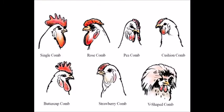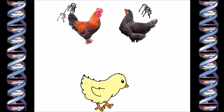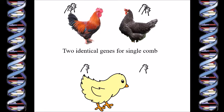Comb shape is inherited. Just as with most genes, each chicken has two genes for comb shape — they inherited one from each parent. A purebred leghorn rooster will pass on one gene for a single comb to his offspring, and a purebred leghorn hen will also pass on one gene for a single comb. So the purebred leghorn chicken will have two genes for a single comb and will express these by actually having a single comb on her head.